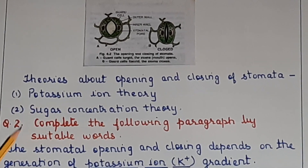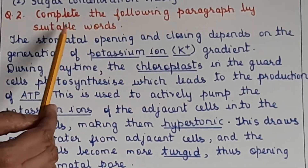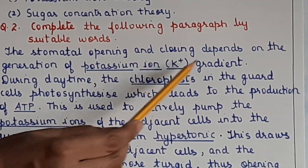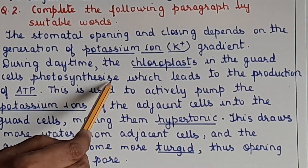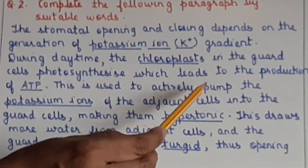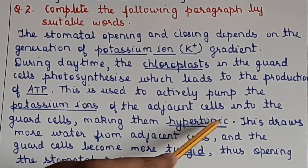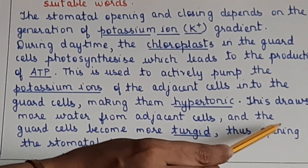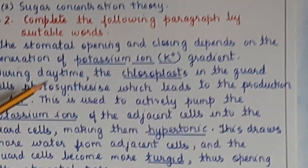The potassium ion theory is asked as a fill-in-the-paragraph question — give it five stars. 'Stomatal opening and closing depends on the generation of a potassium ion gradient. During daytime the chloroplasts in the guard cells photosynthesize, leading to production of ATP. This is used to actively pump potassium ions from adjacent cells into the guard cells, making them hypertonic. This draws more water from adjacent cells and the guard cells become turgid, thus opening the stomatal pore.'